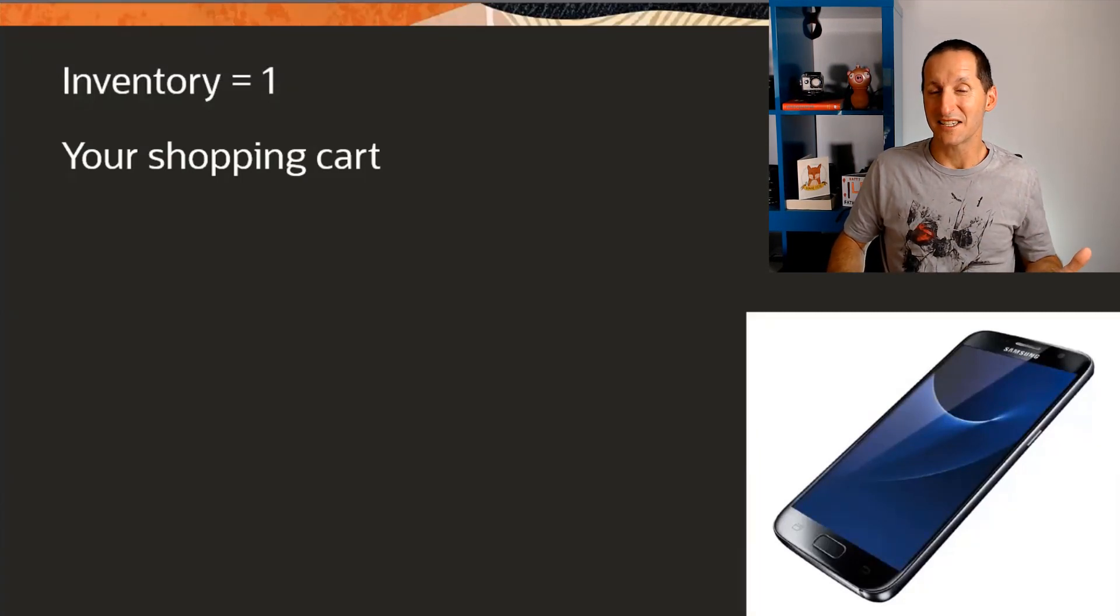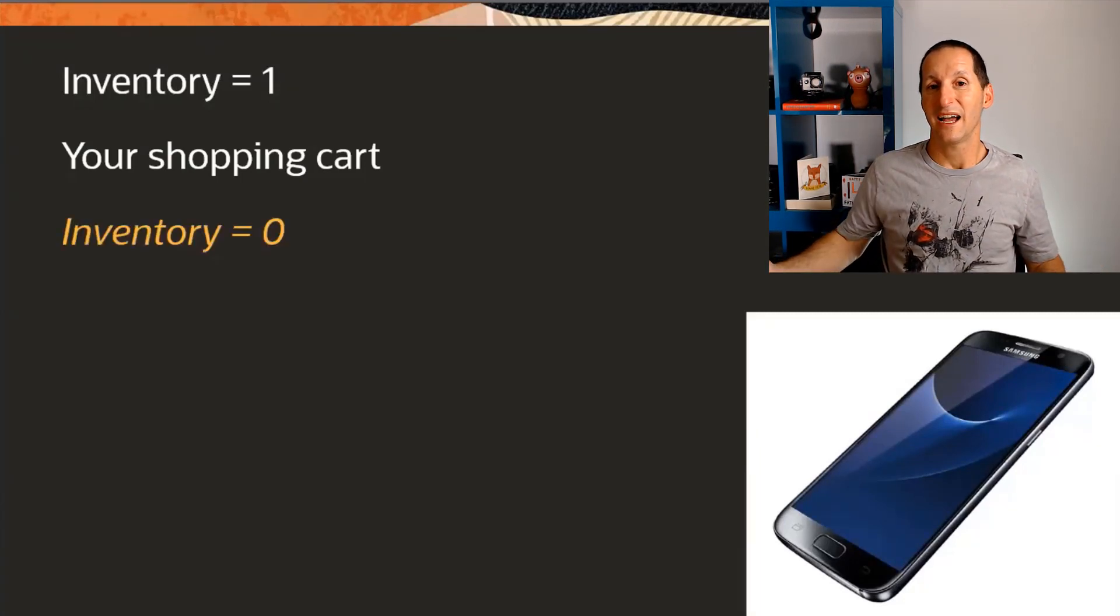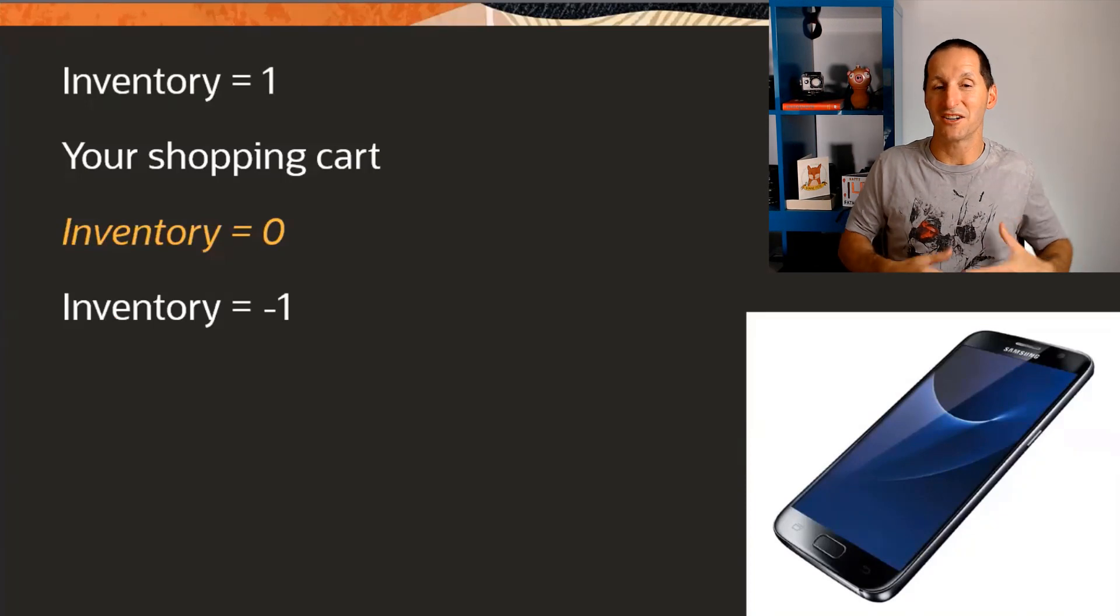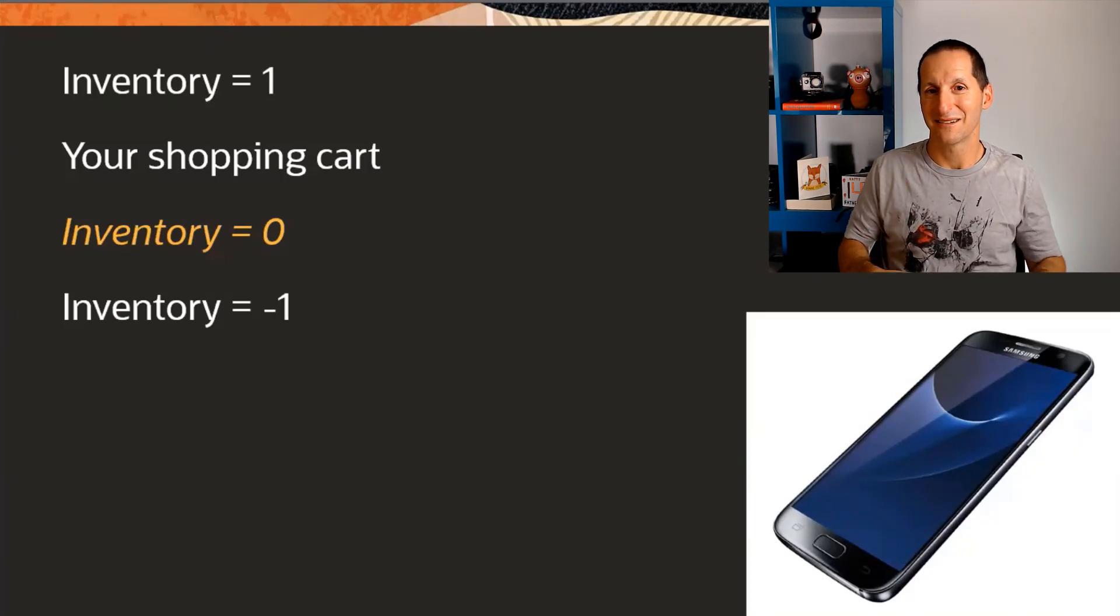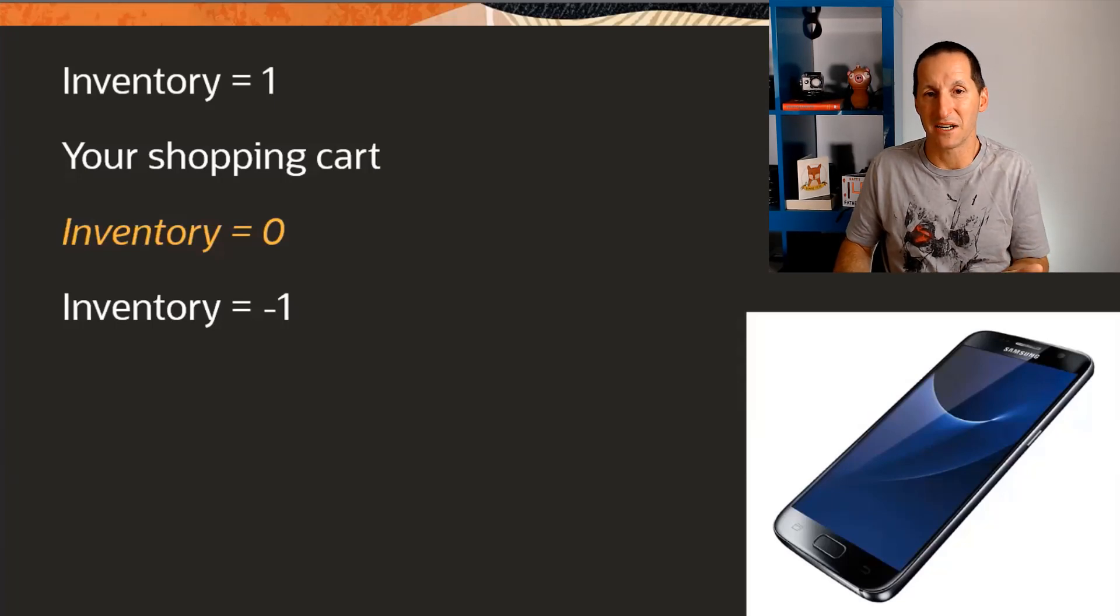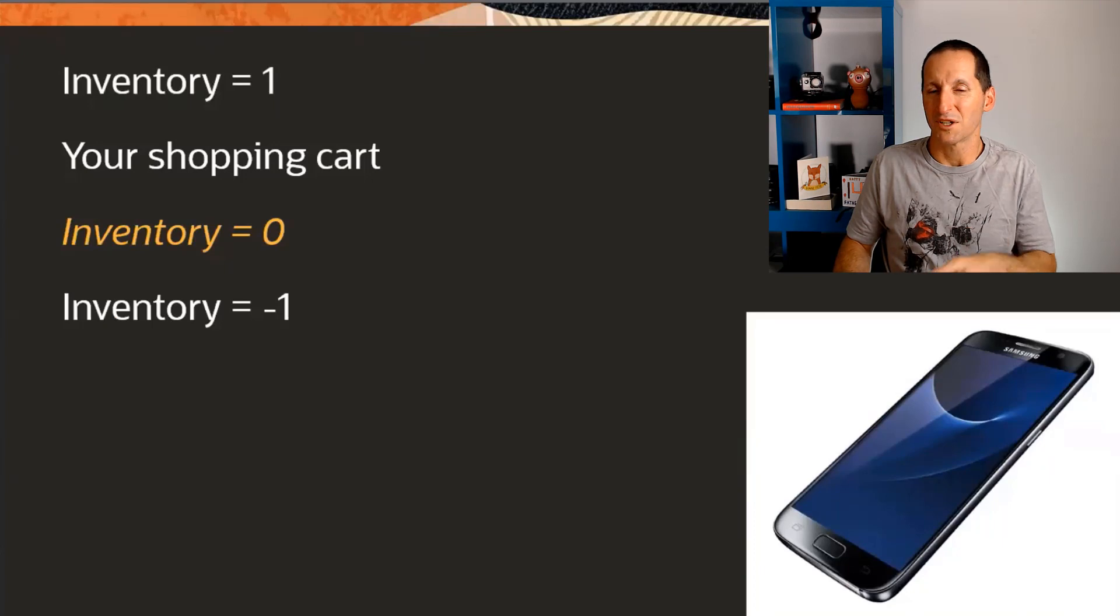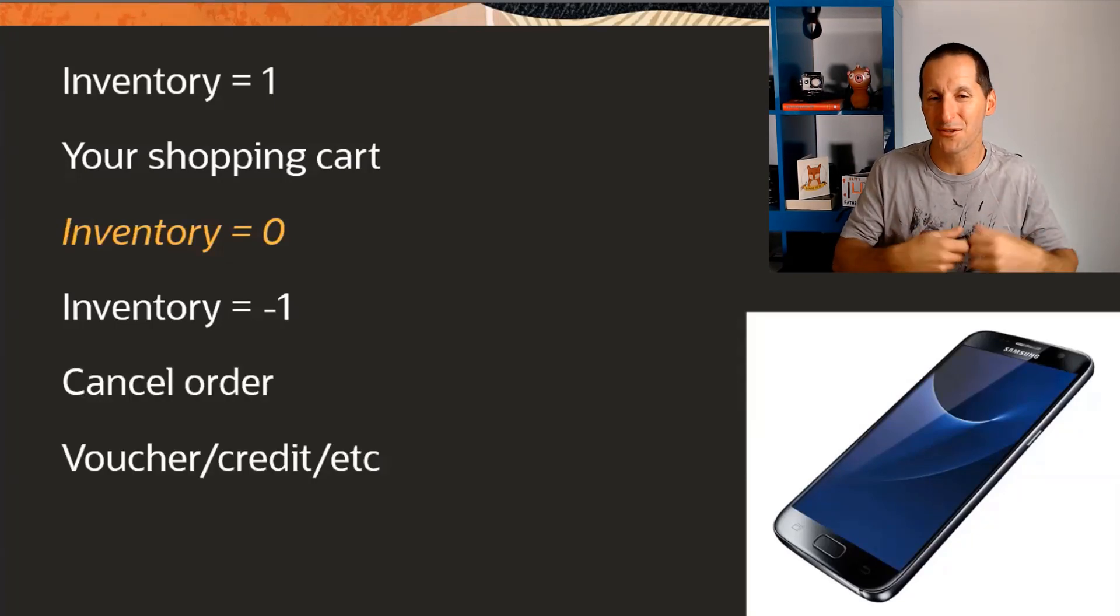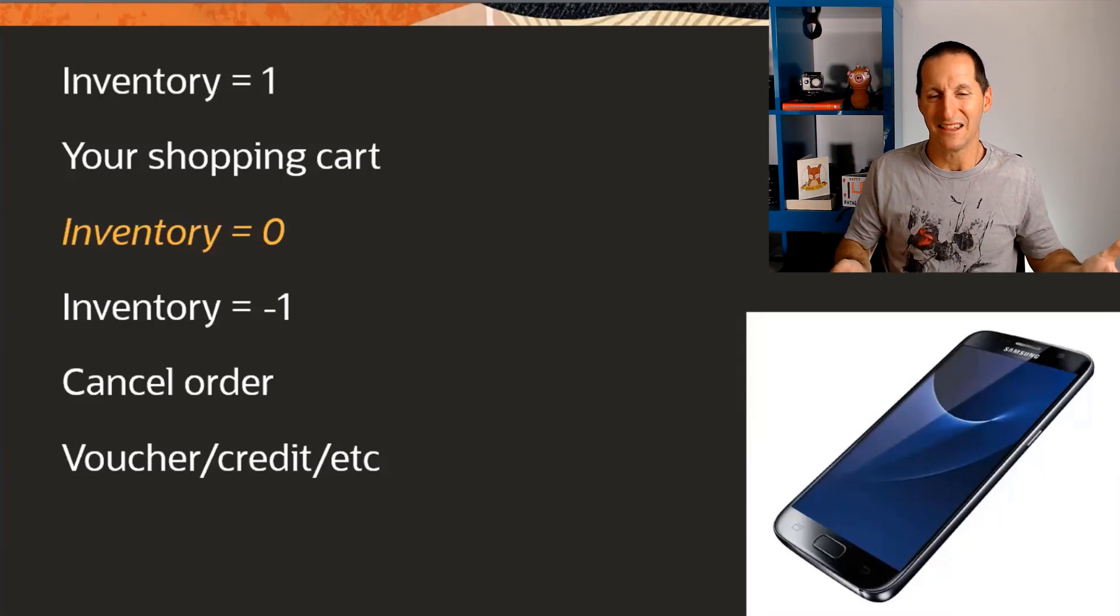Because these systems are eventually consistent, what might happen is in the background, actually the inventory was actually zero. That's a delayed update coming through to your node. So by the time I go to check out, the inventory is actually minus one. There is no phone to give me. Now you might be thinking that's a disaster in terms of data corruption, but it's not. But for a big retailer, what's more important is that they keep you as a customer because you'll do more sales in future. So what do they do? They simply cancel your order and they'll give you credit. They'll do something, they'll throw you a bone, so to speak.